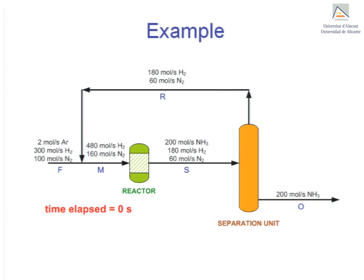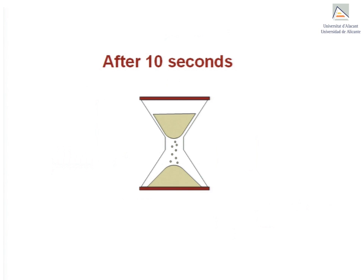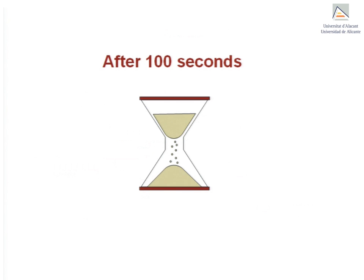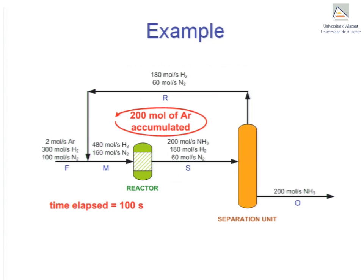Let's look at the situation after 10 seconds. During that time, 20 moles of argon will have entered the system and be flowing around the internal process loop. After 100 seconds, argon will have entered and continues accumulating inside the system. We see that after 100 seconds, 200 moles of argon will have accumulated in the system.